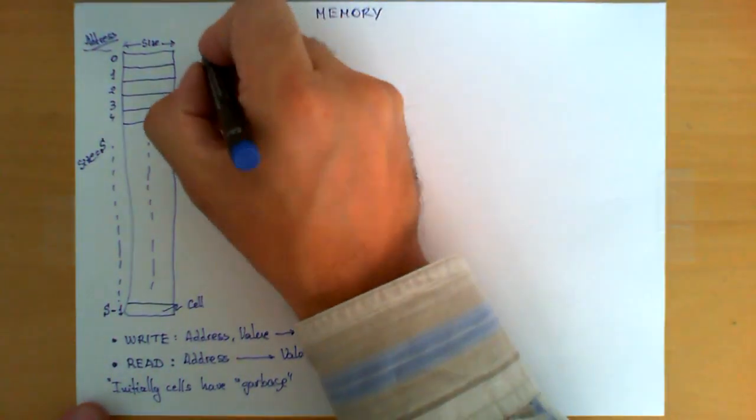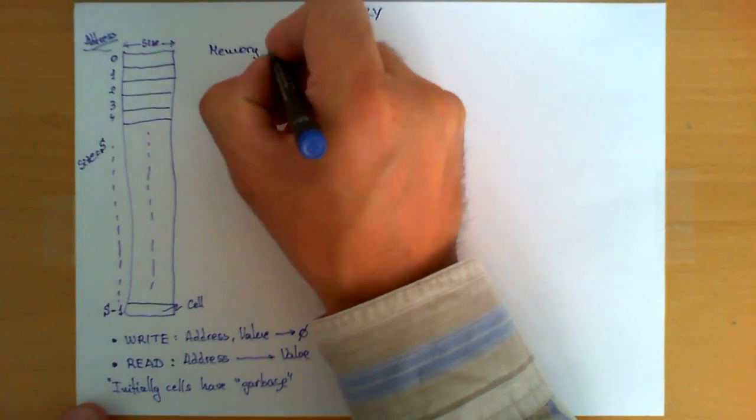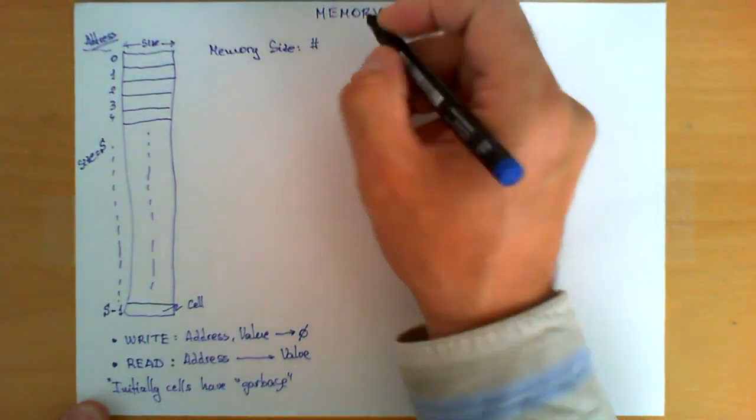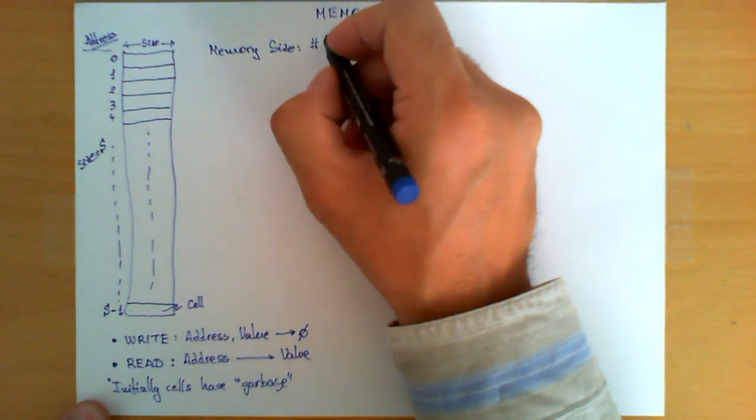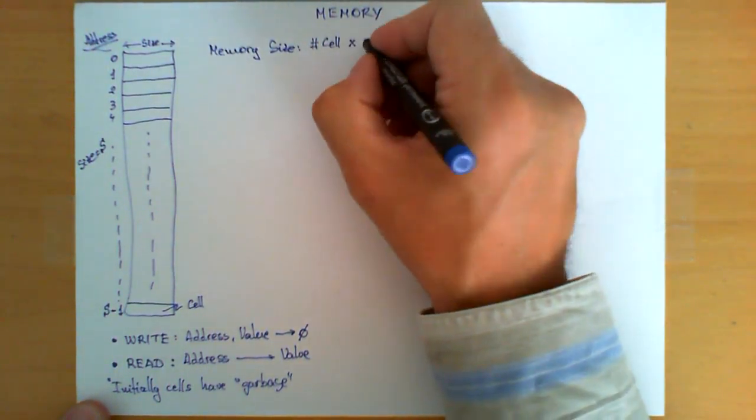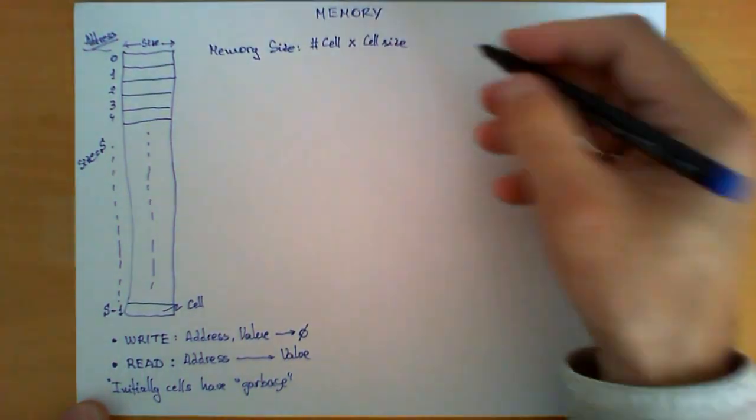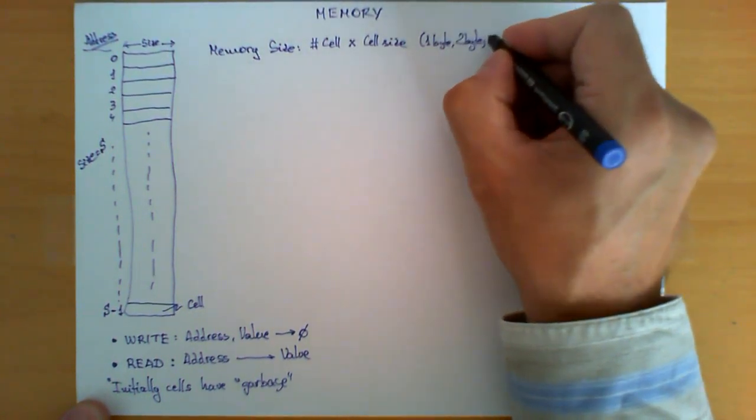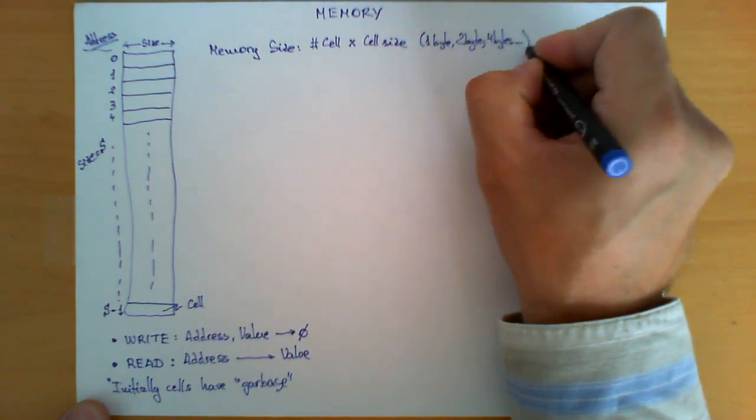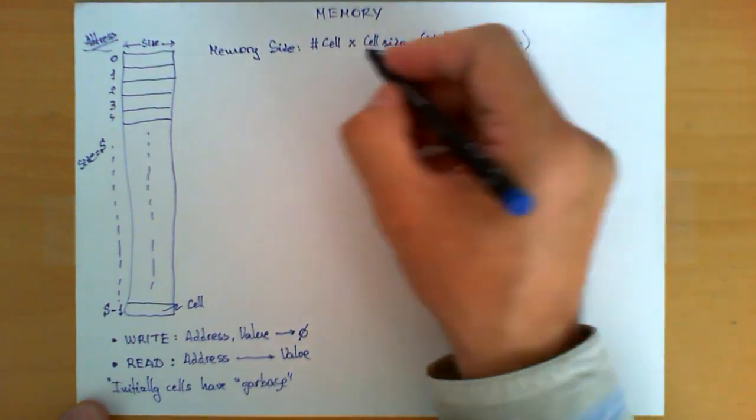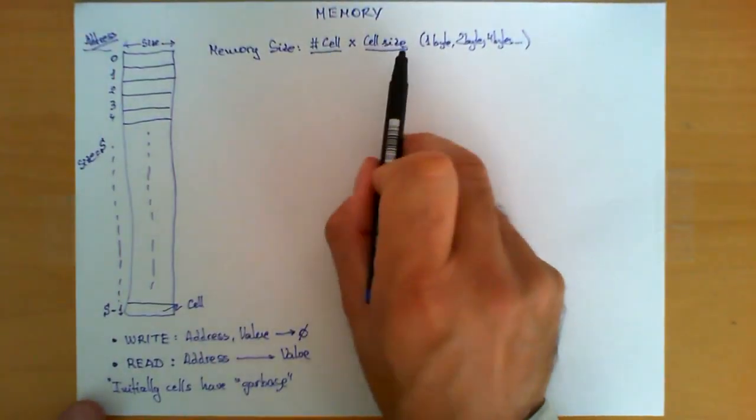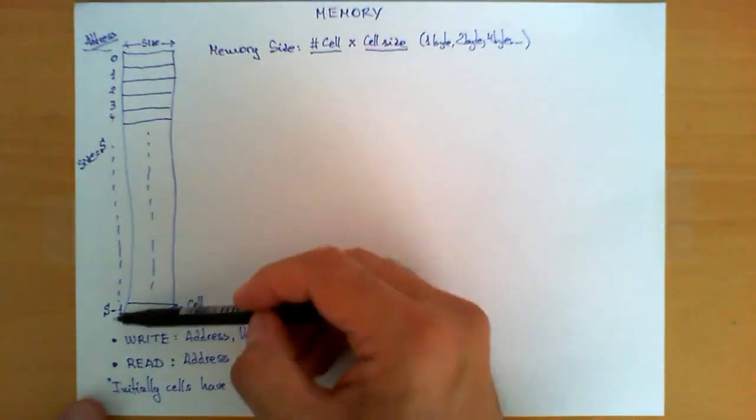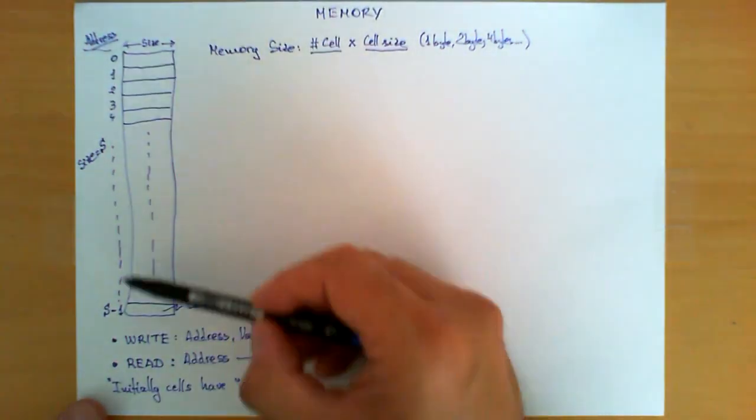Now let's talk briefly about memory size. As you can see, the size of one of these tables depends on the cell size, and the formula to obtain the memory size is the number of cells that you have in your memory times the cell size. Once you know the cell size and the number of cells, then the size of memory is just the product.